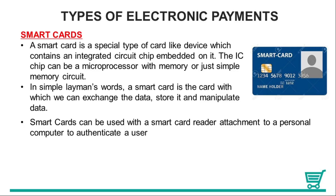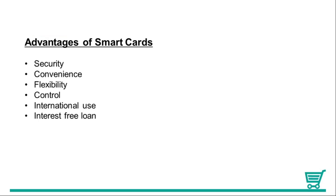We can use a smart card along with a debit card and credit card for different payment options and banking transactions. The advantages of a smart card include being secure, convenient, flexible, and providing control. We can use it for information, transactions, and international usage, as well as interest-free loans.